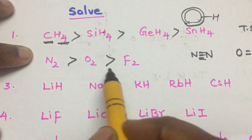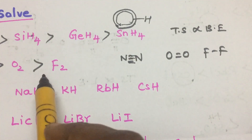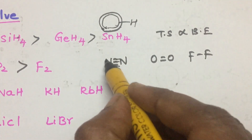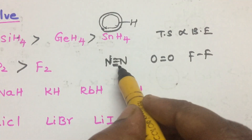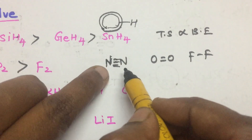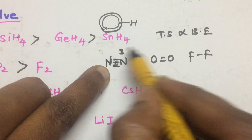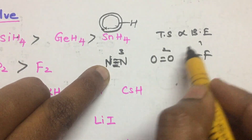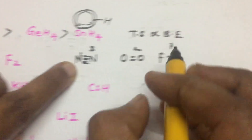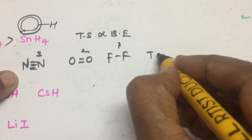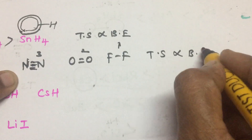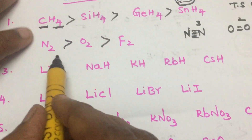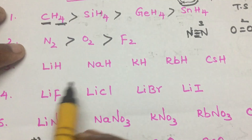For nitrogen, oxygen, and fluorine, you have to look at the bond order. Nitrogen has a triple bond, so bond order is 3. Oxygen has bond order 2, and fluorine has bond order 1. Since thermal stability is directly proportional to bond order, nitrogen is most thermally stable.